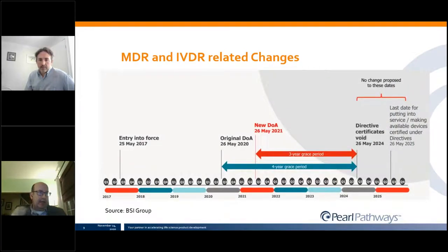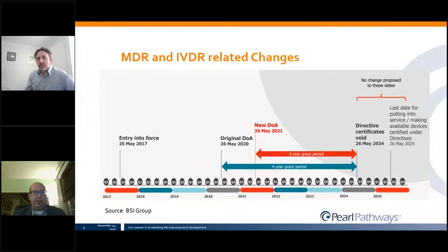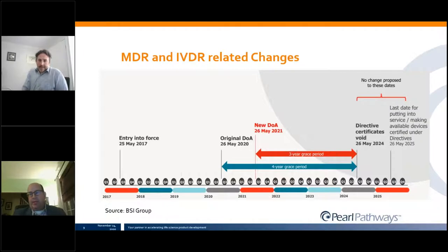Looking at the timeline graphically — based on a schematic provided by BSI — the original date of application, which would have been May 2020, has been moved to May 2021. Directive certificates will still become void by May 26, 2024. So if your product has a current unexpired EC certificate under the directive, you would have until May 2024 for that product to be on the market. After that date, you would need to comply with the MDR from an assessment perspective.